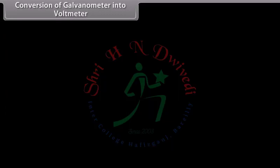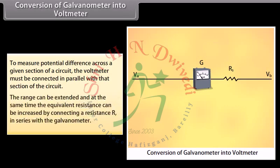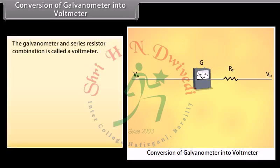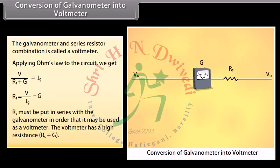Conversion of galvanometer into voltmeter: To measure potential difference, the voltmeter must be connected in parallel with the circuit section. The range can be extended and equivalent resistance increased by connecting a resistance R_S in series with the galvanometer — this combination is called a voltmeter. Applying Ohm's law: V / (R_S + G) = I_G, which gives R_S = V/I_G − G. R_S must be put in series with the galvanometer, and the voltmeter has a high resistance of (R_S + G).